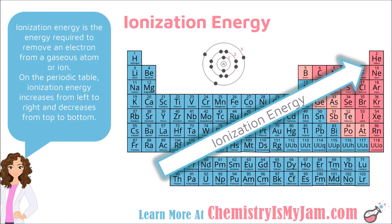The first trend to discuss is ionization energy. This is the amount of energy required to remove an electron from an atom. When you remove an electron from an atom, you are creating an atom with a charge — you are creating an ion. So ionization energy measures the amount of energy required to ionize the atom.